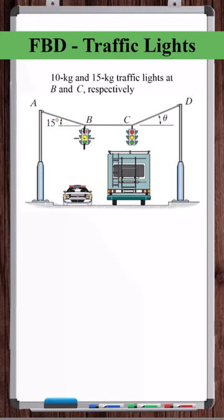We're given that the weight of this traffic light is 10 kilograms, the weight of this traffic light is 15 kilograms. We're dealing with cables, so this is going to be a particle equilibrium problem. We'll need two free body diagrams, one at B, one at C.